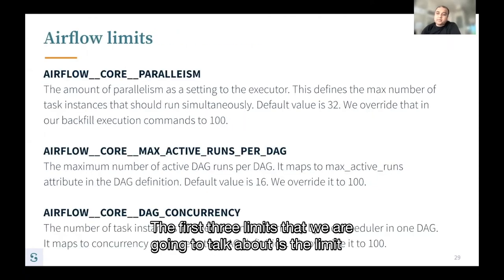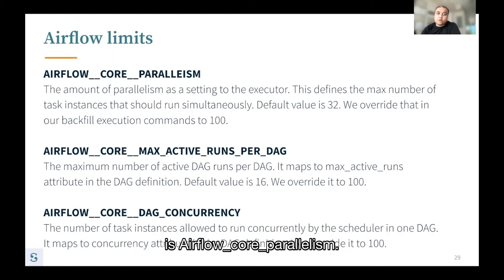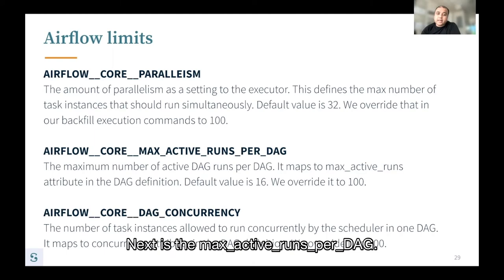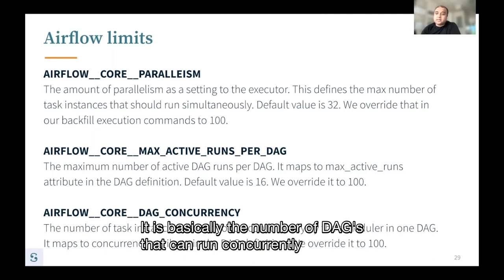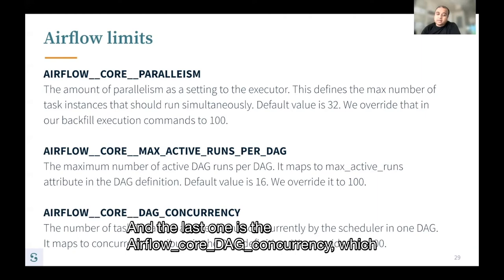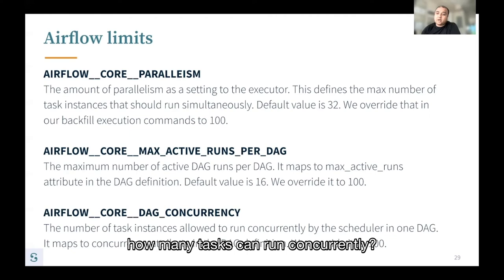The first three limits are related to Airflow. The three main variables we tuned are: Airflow core parallelism — default value is 32, which is the amount of parallelism for the executor; we overrode it to 100. Next is max active runs per DAG — the number of DAGs that can run concurrently for a single DAG; we overrode it to 100. And last is Airflow core DAG concurrency — how many tasks from a single DAG can run concurrently; we overrode that to 100 as well.